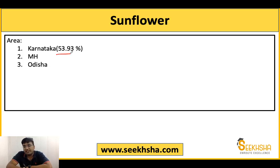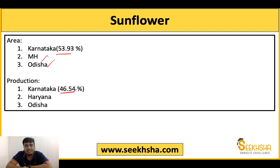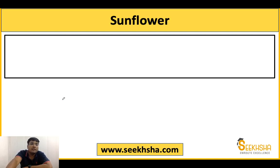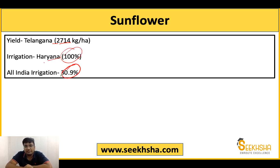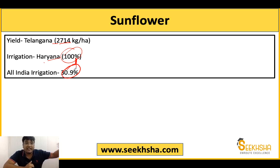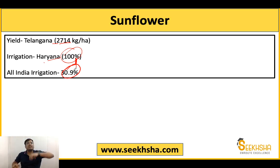Karnataka produces more than 50% of sunflower and also leads in area cultivation, followed by Maharashtra and Odisha. In production, Karnataka is again highest at 46.54%, followed by Haryana and Odisha. For yield, Telangana has the highest at 2714 kg per hectare. Irrigation is 100% in Haryana and the All India level is 30.9%. This stark contrast — 100% in one state versus only 30.9% All India — is a clear example of the regional imbalance in India's agricultural development.